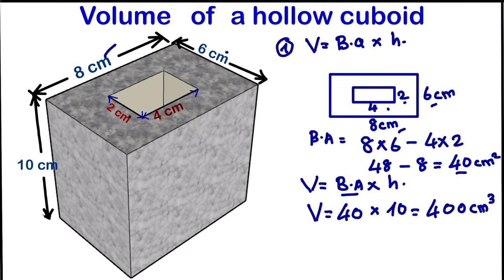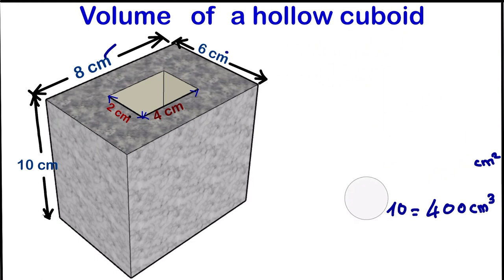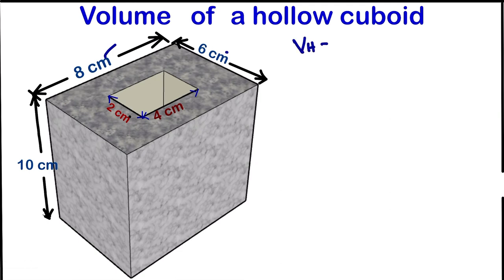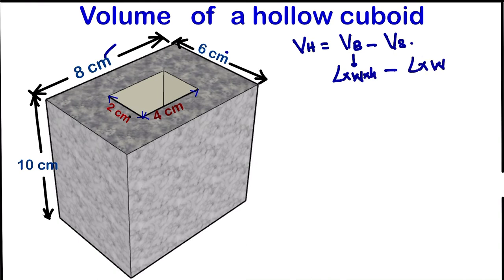So let us look at the second method. For the second method, we can say the volume of the hollow cuboid equals the volume of the big cuboid minus the volume of the smaller cuboid inside. So volume equals length times width times height, minus length times width times height.